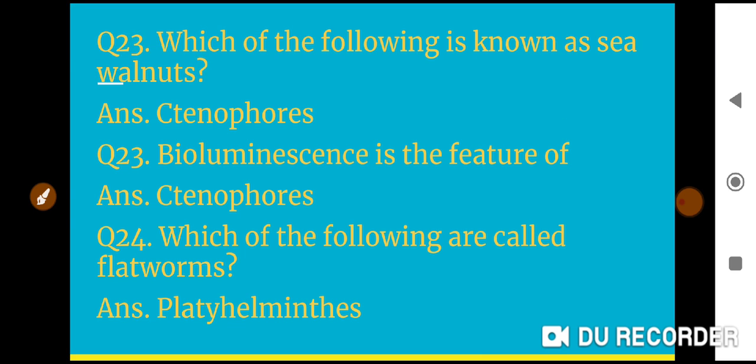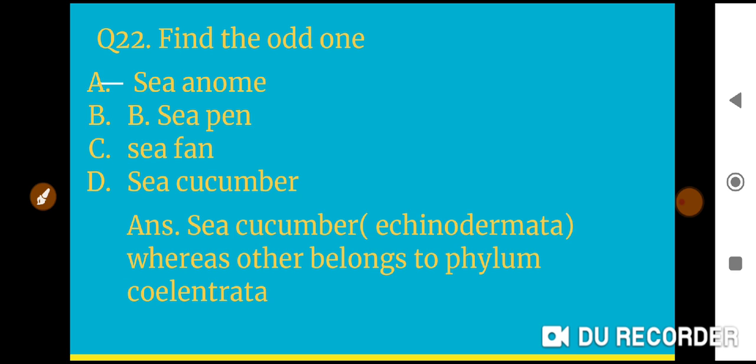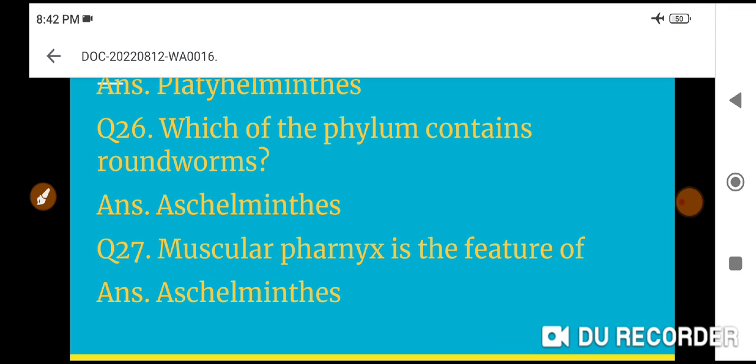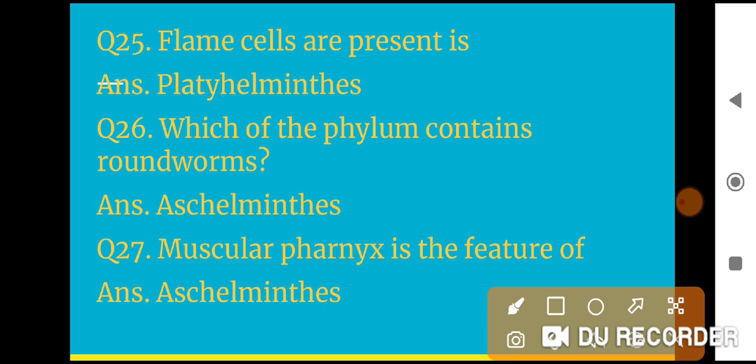There is misprinting here in questions 23, 24. Question 23: Which of the following is known as sea walnuts? Ctenophores is known as the sea walnuts. Question 24: Bioluminescence is the feature of Ctenophores.